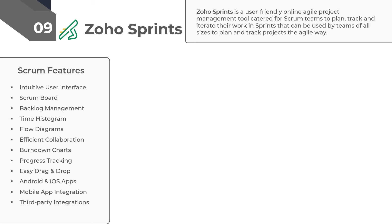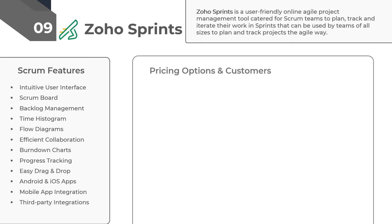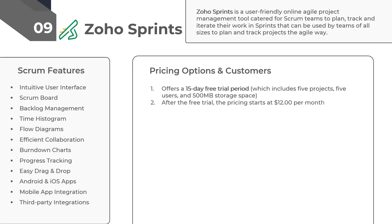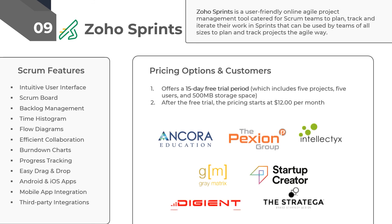Unlike other Scrum tools, Zoho Sprints allows you to even schedule meetings and send invites with location and duration. This is great when you want to run Scrum meetings. Other features include a Scrum board, dashboard, and third-party integrations. Zoho Sprints offers a 15-day free trial to help you experience all the features in their professional plan. After the free trial, the pricing starts at $12 per month. According to Zoho Sprints, around 100,000 plus Agile teams are using it. Some of its star customers include Ancora Education, the Pexion Group, Grey Matrix, Digiant, and others.